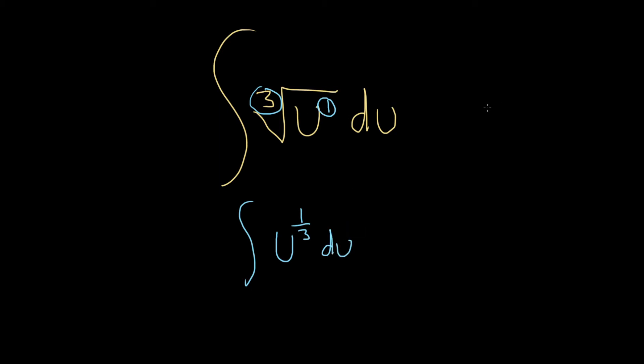It always works that way. If you had the nth root of, say, u to the m, that would just be equal to u, and it would be m over n. Always. It's always this number over this number, every single time.